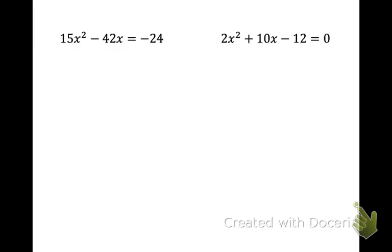So notice on the next problem that we do not have everything on one side of the equal sign. So let's add the 24 over and have this set equal to 0. Now believe it or not, we do have a greatest common factor of 3. So factor it out to the front. Put what you have left when we divide out 3. So 5x squared minus 14x plus 8.